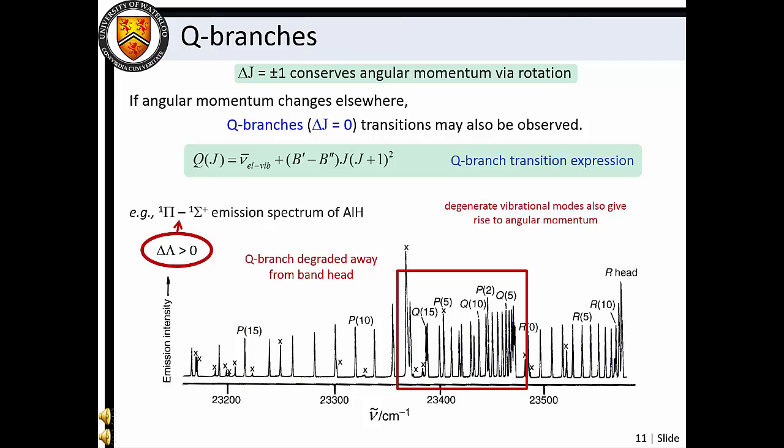For example, in the singlet pi to singlet sigma transition of aluminum hydride, delta lambda does not equal zero. As a result, a dense, closely spaced series of Q-type transitions are observed near the vibronic band origin. Note that the Q branch is degraded away from the band head. This is a direct result of the difference in rotational constants for the two states. If we employ the delta J equals zero selection rule to our transition expression, we can write the analytical expression for the Q-type transitions shown here. It is now obvious that if the excited state rotational constant is smaller than the ground state rotational constant, the Q branch will begin at the band origin and extend to lower frequencies. This same condition results in an R branch band head.